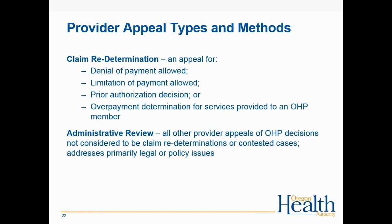To recap the distinction: a claim redetermination is an appeal for a denial of payment, limitation of payment, prior authorization decision, or overpayment determination for services provided. An administrative review covers all other provider appeals of OHP decisions — those not considered claim redeterminations or contested cases — and these usually address legal or policy issues.